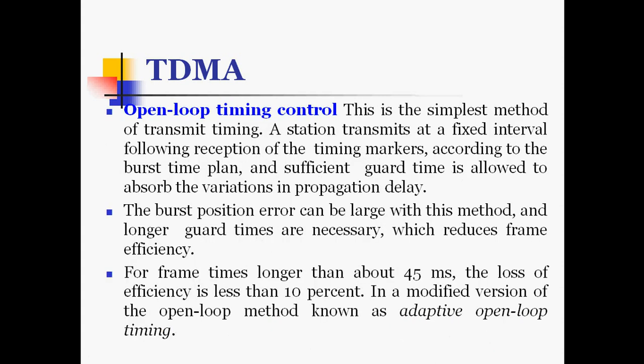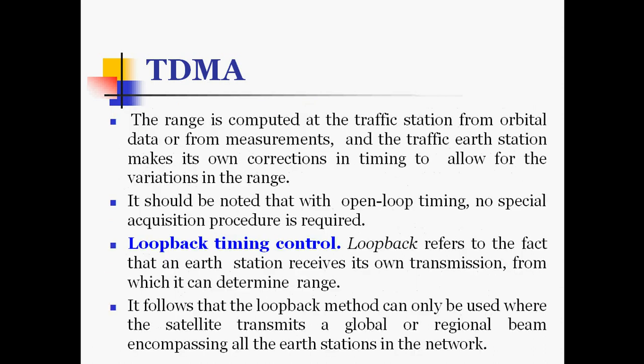Open loop timing control is the simplest method of transmit timing. A station transmits at a fixed interval following reception of the timing markers according to the burst time plan, and sufficient guard time is allowed to absorb variations in propagation delay. The burst position error can be large with this method, and longer guard times are necessary, which reduces frame efficiency. For frame times longer than about 45 ms, the loss of efficiency is less than 10%. In a modified version called adaptive open loop timing, the range is computed at the traffic station from orbital data or measurements, and the earth station makes its own timing corrections for variations in range.